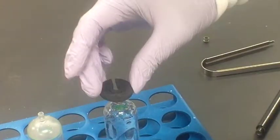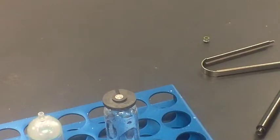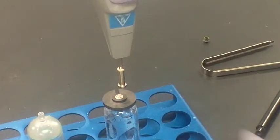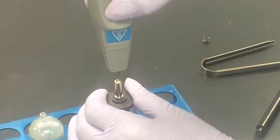Using the seal guide prevents the seal former from being pressed into the tube shoulder. If not using the seal guide, beware not to press the seal former onto the tube shoulder. It may cause the tube to leak.